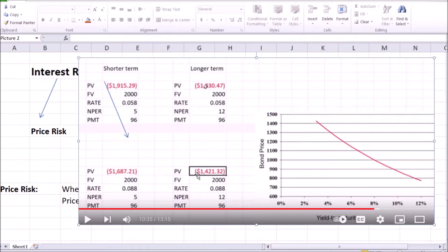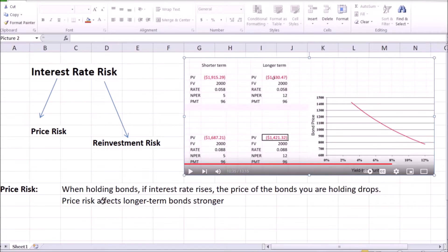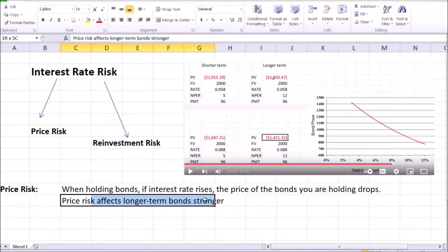In the previous example we had two bonds, shorter-term and longer-term, and for both of those all the conditions were the same with the change in interest rates from 5.8% to 8.8%. The decline in the longer-term bond price was bigger than the decline in the shorter-term bond price, showing that price risk affects longer-term bonds to a larger degree than shorter-term bonds.